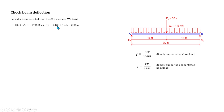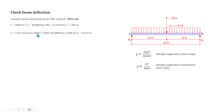The uniform dead load is 0.125 kips per inch and the span is 360 inches. Plugging in: δ_uniform = 5 × 0.125 × 360⁴ / (384 × 29,000 × 1830) = 0.515 inches.